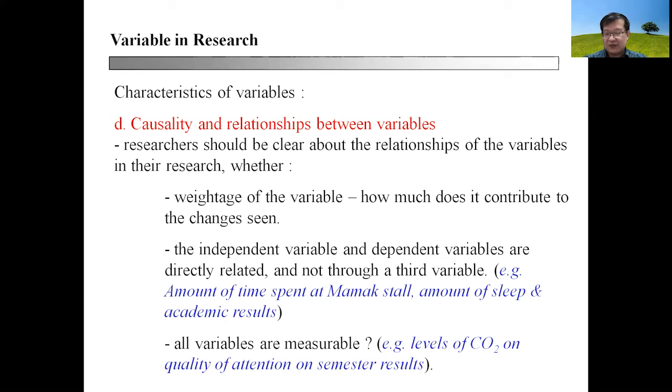There are so many intermediate variables involved. This could have included amount of study time, amount of sleep time, and all kinds of other variables. So even though the amount of time spent at mamak stall could be a very good independent variable, the dependent variable in terms of academic results may not be a reliable indicator.